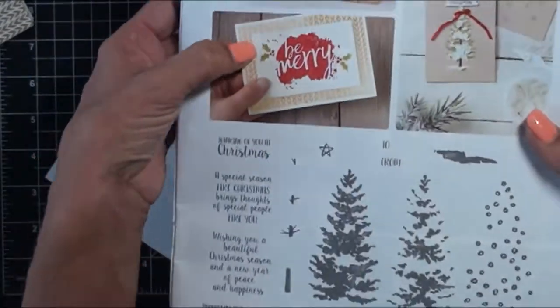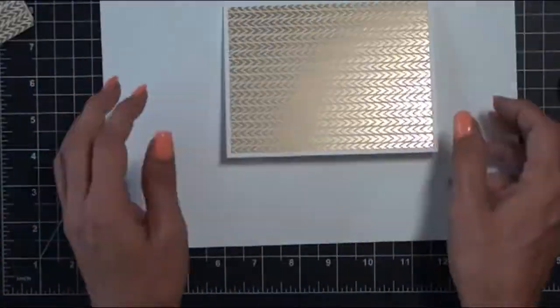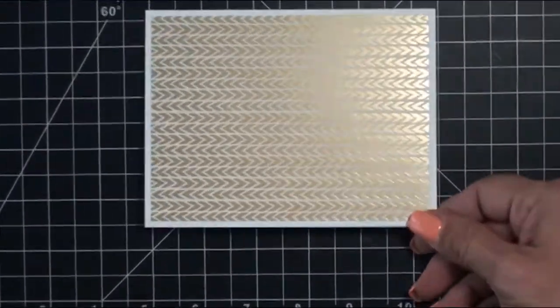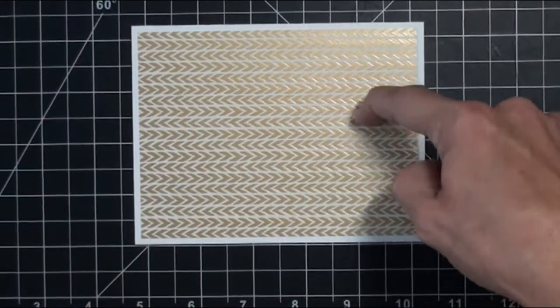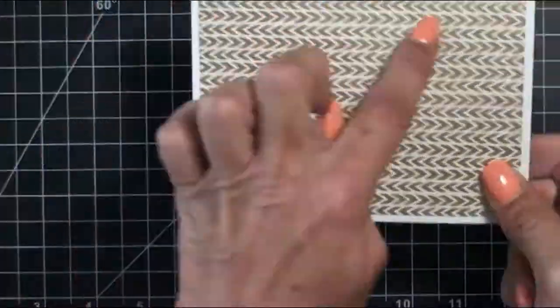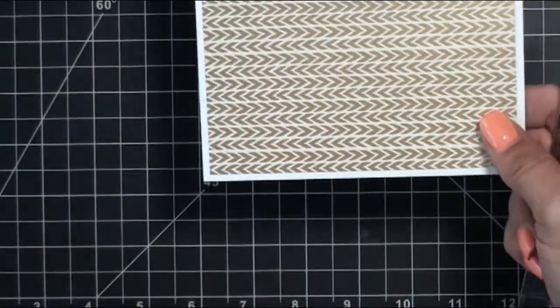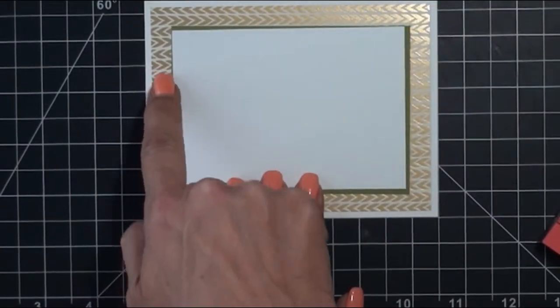So now after I've gone ahead and scored everything, I'm just now adhering the top, or that panel to the cardstock. That's the direction I really wanted it to go in all along, but like I said, I'm totally okay with how it all turned out.